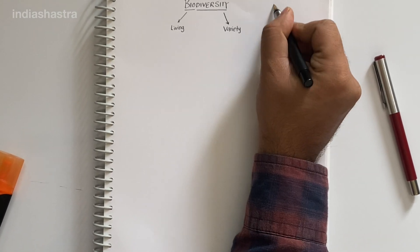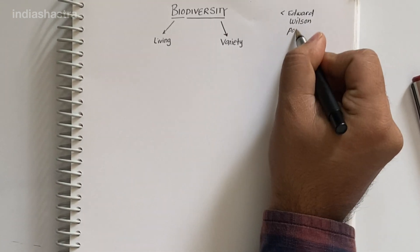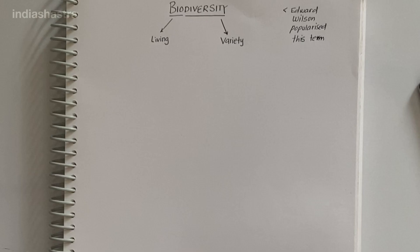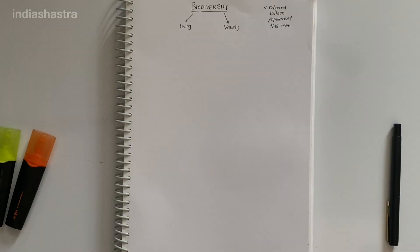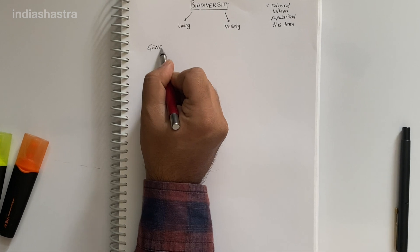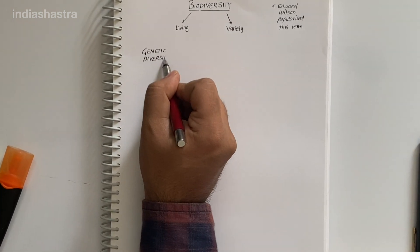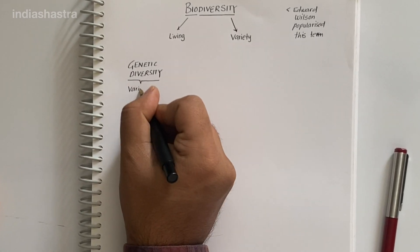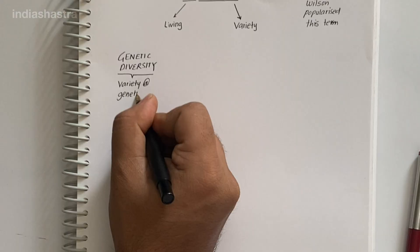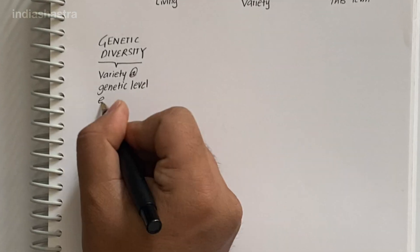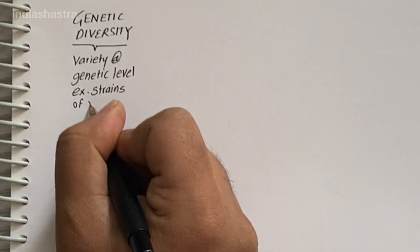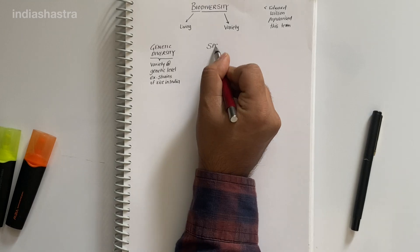This term is popularized by the German sociologist Edward Wilson to describe combined diversity at all levels of biological organization. The most important of them are genetic diversity — a single species that shows high diversity at the genetic level over its distributional range. For example, India has more than 50,000 genetically different strains of rice and 1,000 varieties of mangoes.